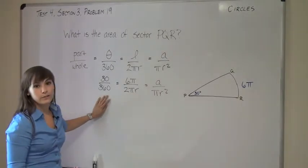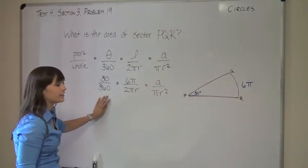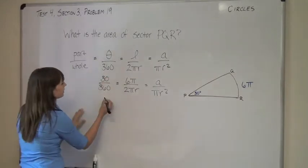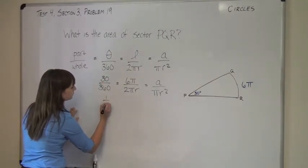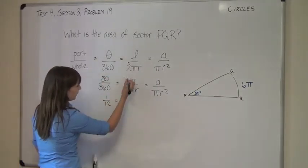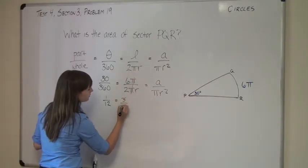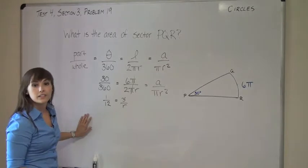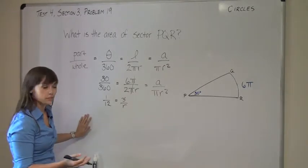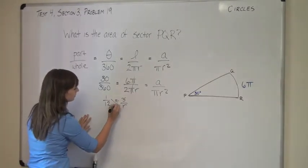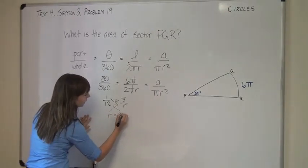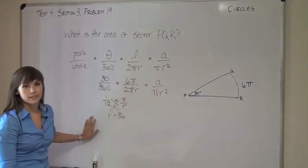Now, if you can simplify a fraction, you always should, just to make your life easier. So let's simplify this one down to 1/12, and this one down, cross out the πs, to 3/R. Anytime you have two fractions equal to each other, just cross multiply. And you see that the radius of the circle is 36.